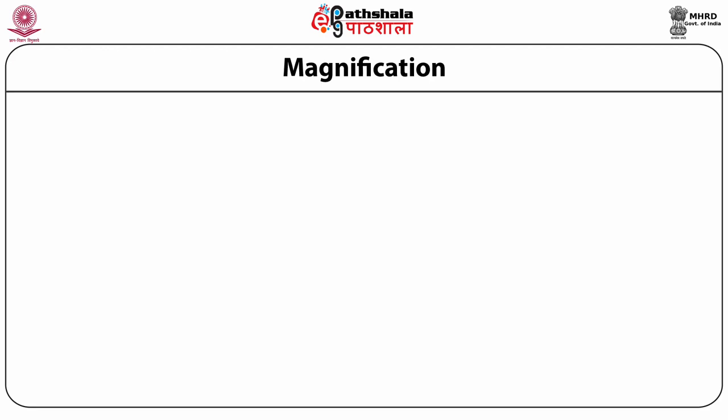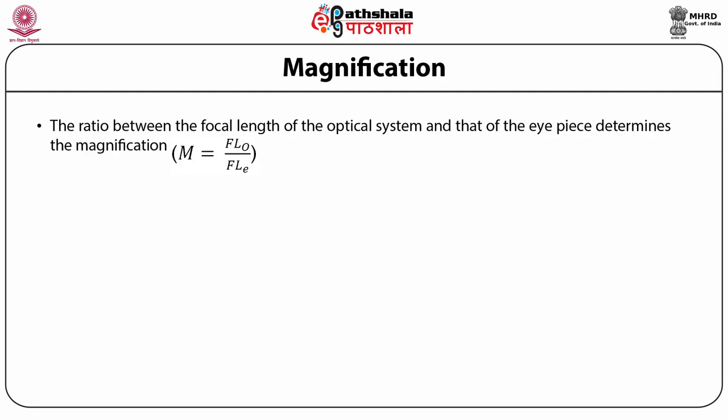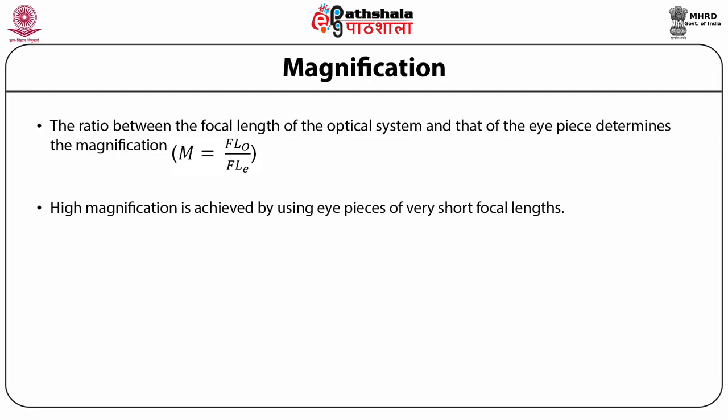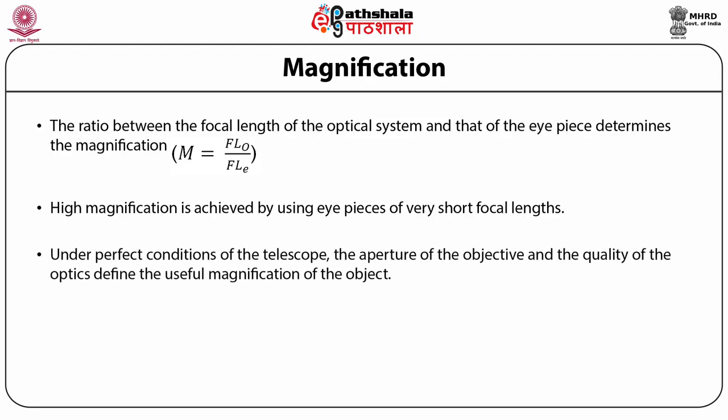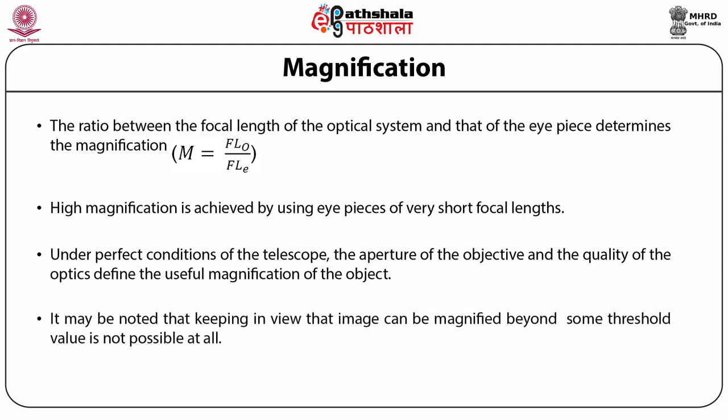One more important term in the functioning of the telescope is magnification. Magnification is defined as the ratio between the focal length of the optical system and that of the eyepiece — so magnification equals the focal length of the objective divided by the focal length of the eyepiece. High magnification is achieved by using eyepieces of very short focal lengths. Under perfect conditions, the aperture of the objective and the quality of the optics define the useful magnification. It may be noted that magnifying an image beyond some threshold value is not possible.